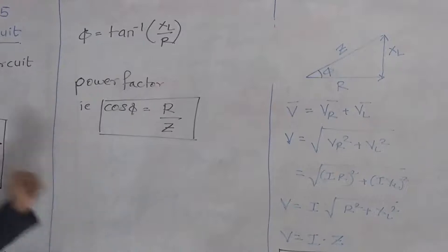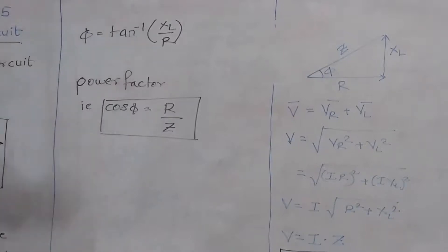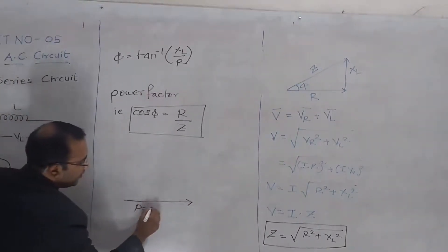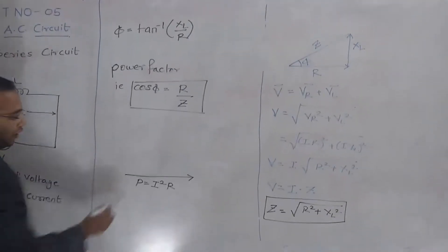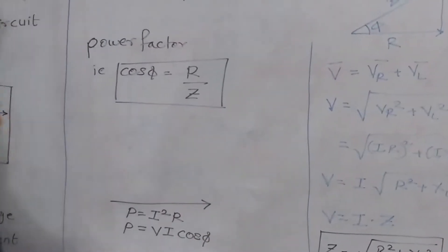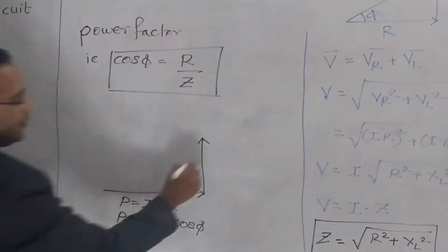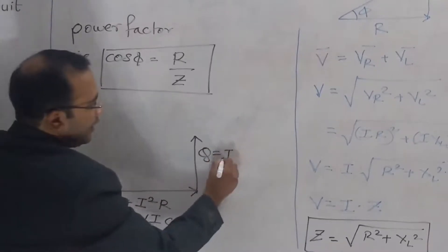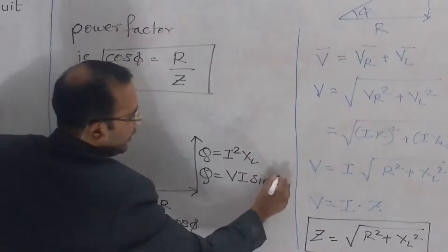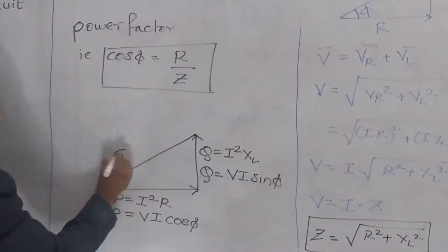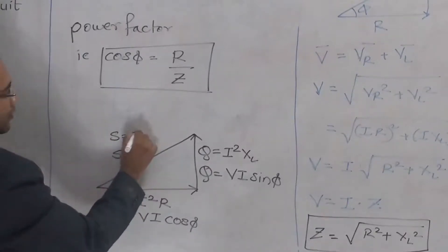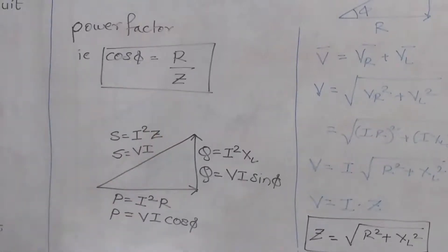Similarly, we can derive the formula for active power, reactive power, and apparent power. The real axis represents true power: active power P equals I squared R, or P equals VI cos phi. The imaginary power is called reactive power, denoted Q, given by I squared XL, or Q equals VI sin phi. The resultant is apparent power, denoted S, equal to V into I, or S equals I squared into Z.